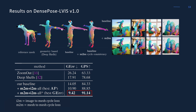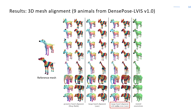Without any manual annotations for inter-category correspondences, our method obtains state-of-the-art alignment results, outperforming dedicated methods for matching 3D shapes. Even in the extreme case of human-dog alignment, as shown here, our method produces meaningful correspondences in 3D space and consistent cross-category predictions in pixel space. In the final slide, we show more qualitative results for 3D mesh alignment of 9 animals. Our model automatically discovers correspondences across semantically related parts of objects from different categories without any annotations across categories.